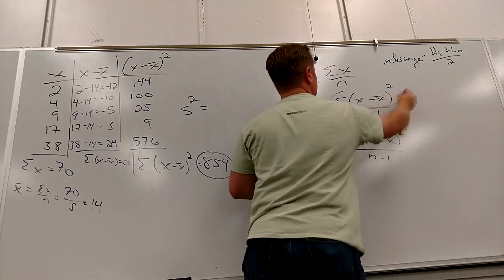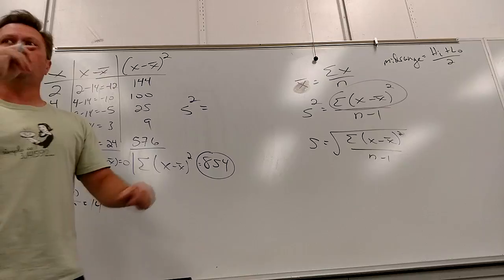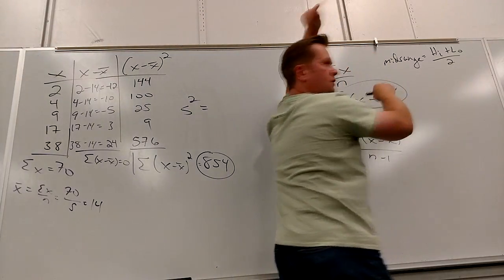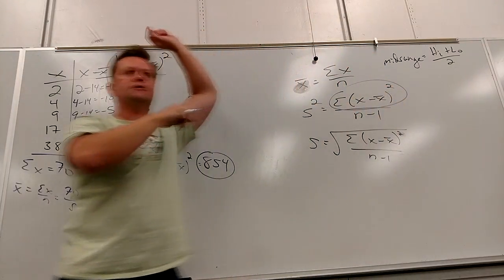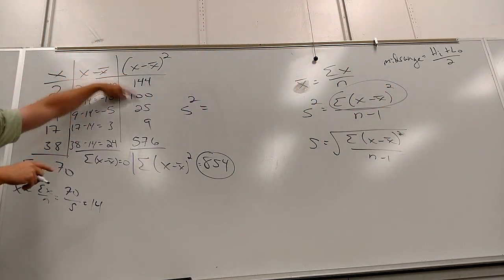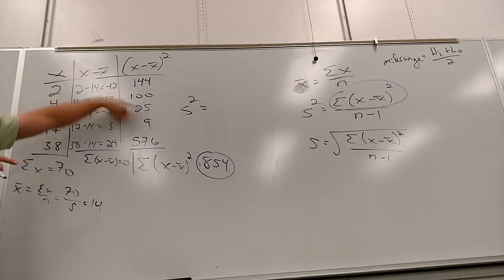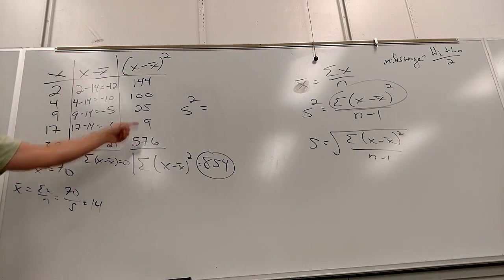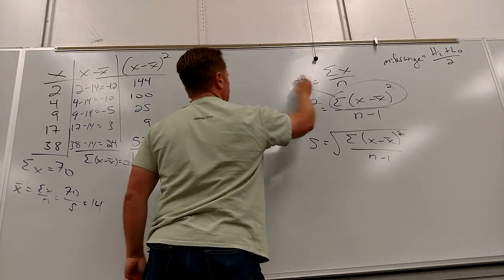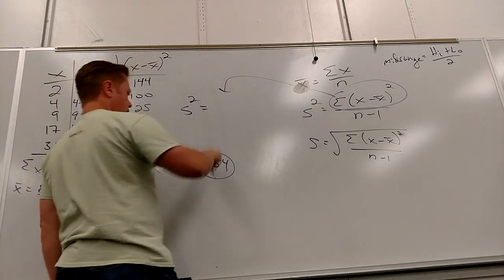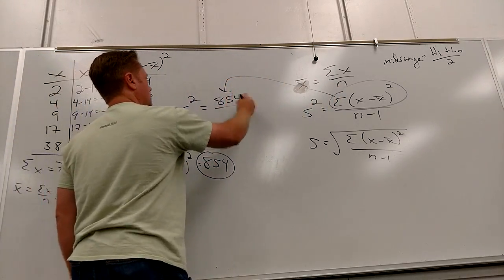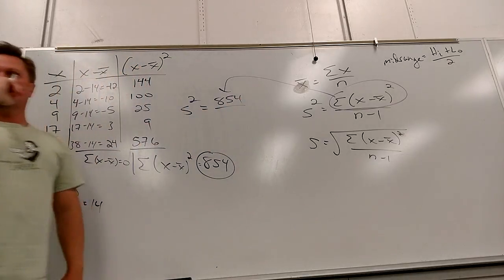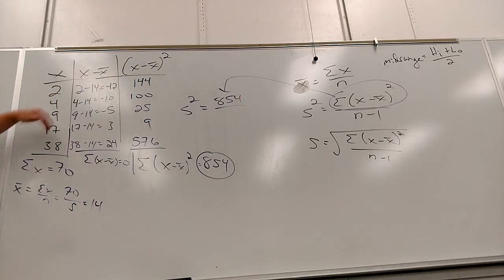That's the sum of (x minus x-bar) squared — you don't plug stuff in there. That is the sum of all of these; you've already plugged stuff in. So replace this with 854, because that's what it is, and divide by 4, because there are 5 data points minus 1.